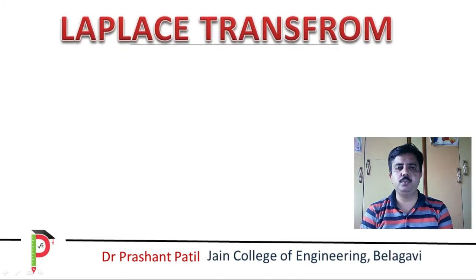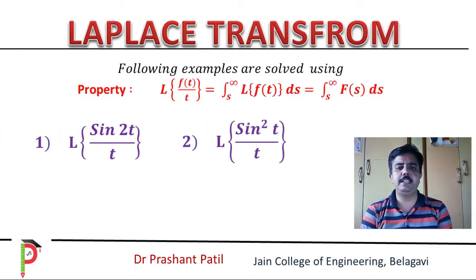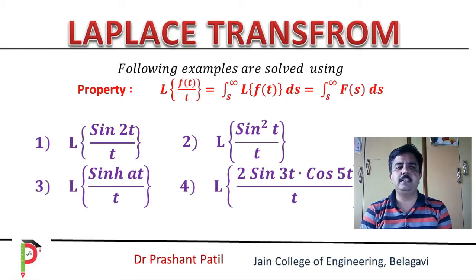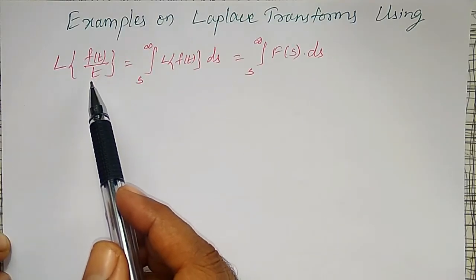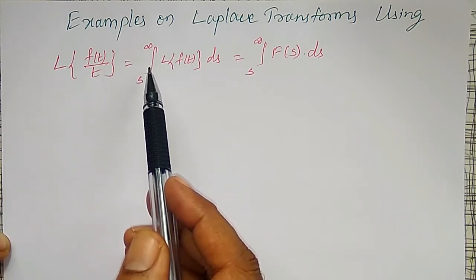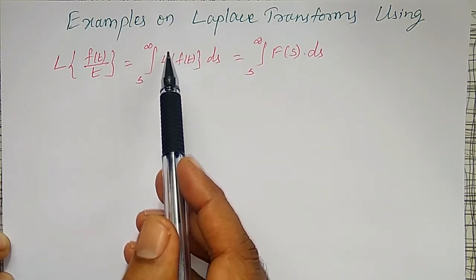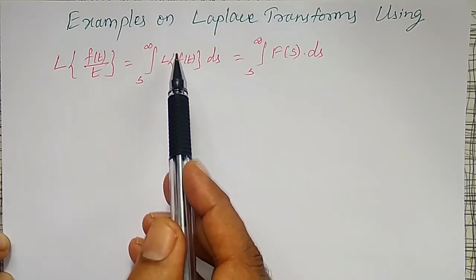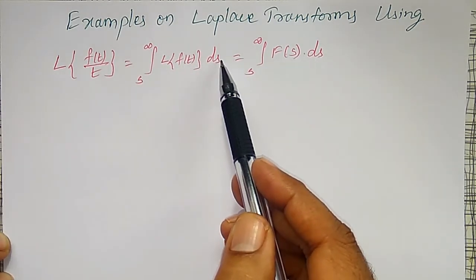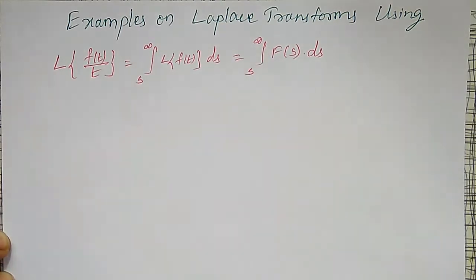In this video, I am going to solve examples on Laplace transforms using the property: the Laplace transform of f(t) divided by t is transformed as integration from s to infinity of the Laplace transform of f(t) with respect to ds. This Laplace transform of f(t) is a function of s, so we integrate with respect to s between the limits s to infinity.